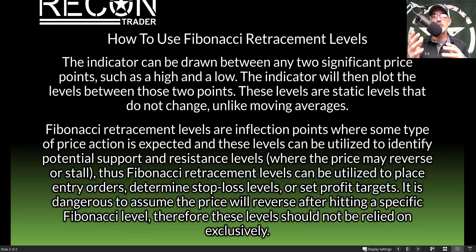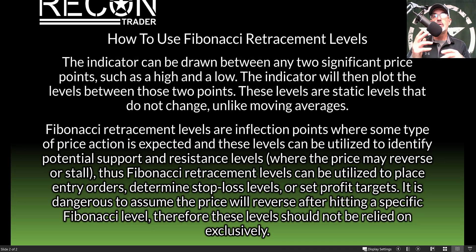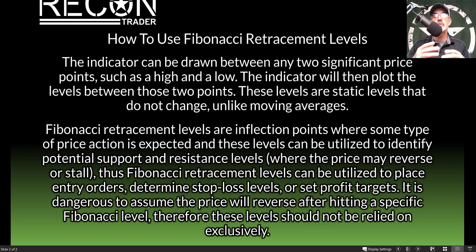Fibonacci retracement levels are inflection points where some type of price action is actually expected, and these levels can be utilized to identify potential support and resistance levels where the price may reverse or stall. Fibonacci retracement levels can be utilized to place entry orders, determine stop losses, or set profit targets.